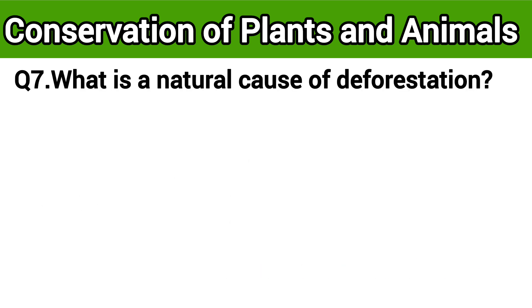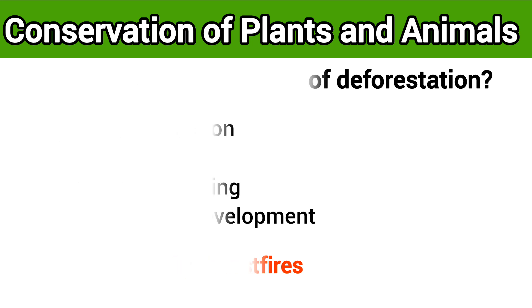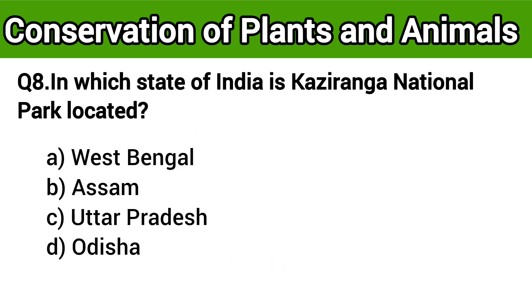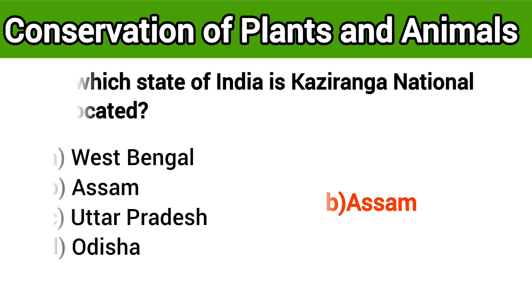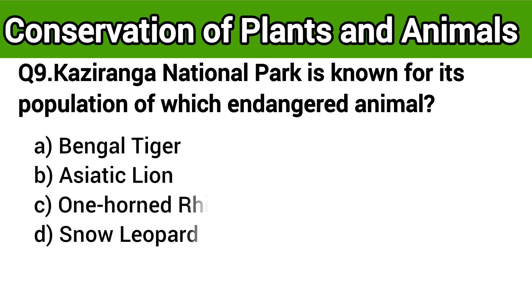Question number seven: What is the natural cause of deforestation? The right answer is option B: forest fires. Question number eight: In which state of India is Kaziranga National Park located? It is known for its population of which endangered species?